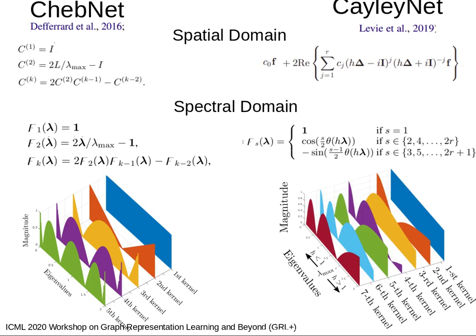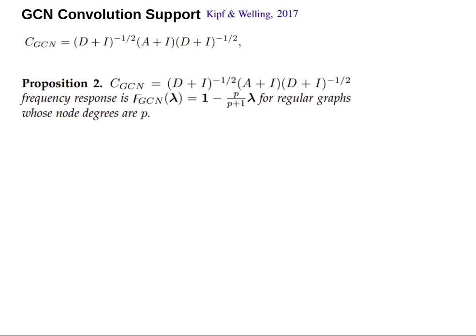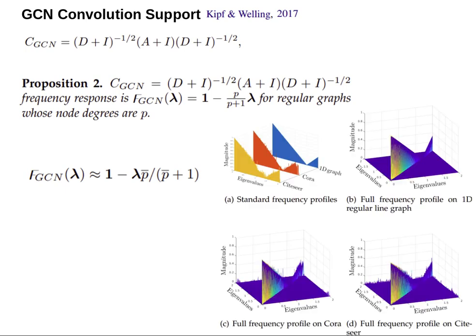Since the initial convolution formula is spectral, GCN generally classified as spectral method. However, we showed that GCN convolution after renormalization trick is not spectral anymore. So we can approximate the theoretical frequency response as a function of average node degree. We calculated its frequency response on regular line graph, CORA, and CiteSeer citation graph as well in the figure.